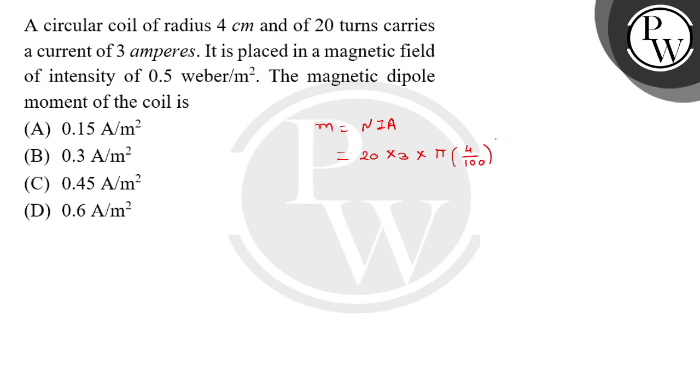So we'll convert it into meters, and 4 centimeters squared. So 4 meter squared. Now put all this value together: it is 20 times 3, value of pi is 3.14, and it is 16 divided by thousand.